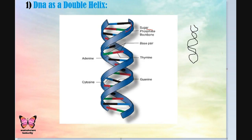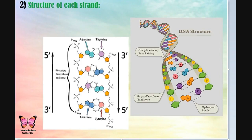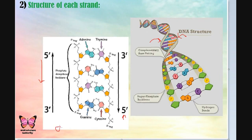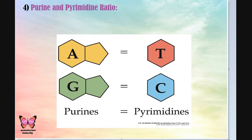Nitrogen bases which are complementary to each other are aligned on the central axis, making it look like a twisted ladder or helix. The rungs and ladders are composed of nitrogen bases complementary to each other. The nucleotides are attached and the strand is aligned in the direction of 5' to 3'. Both strands are aligned in opposite directions, making them anti-parallel to each other.